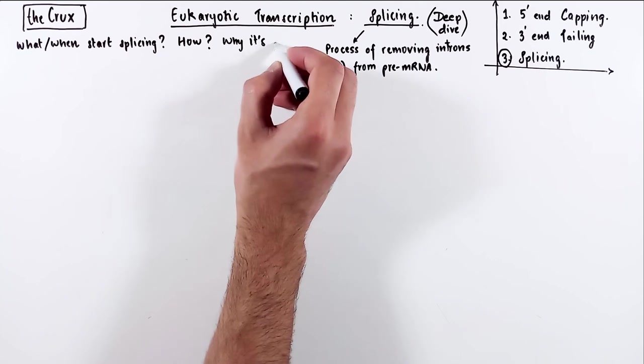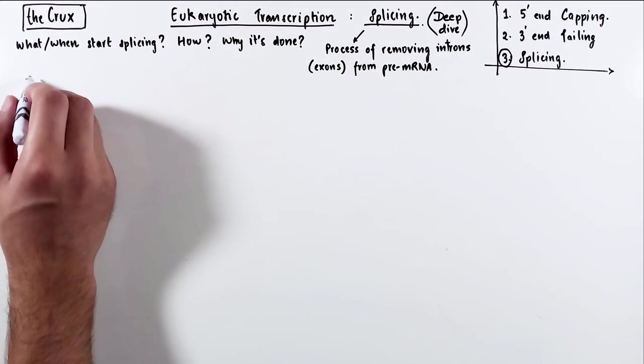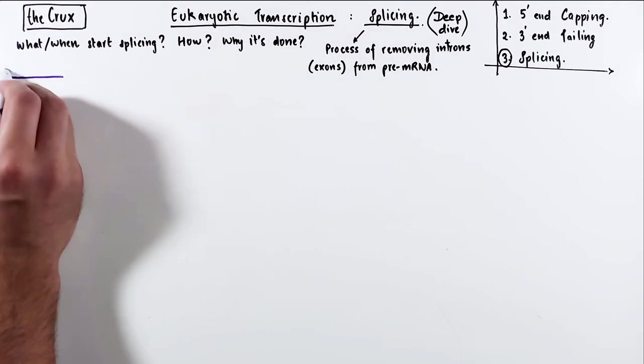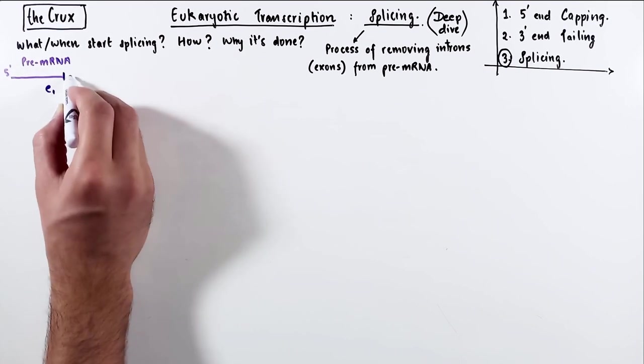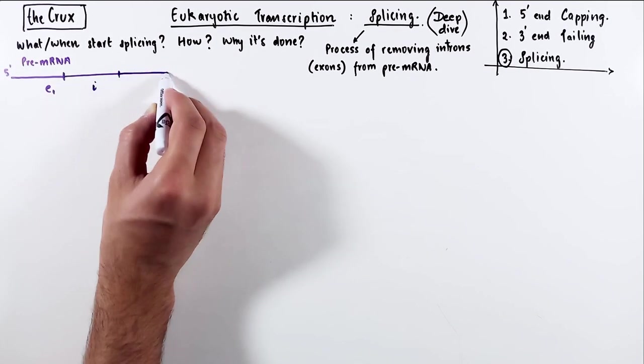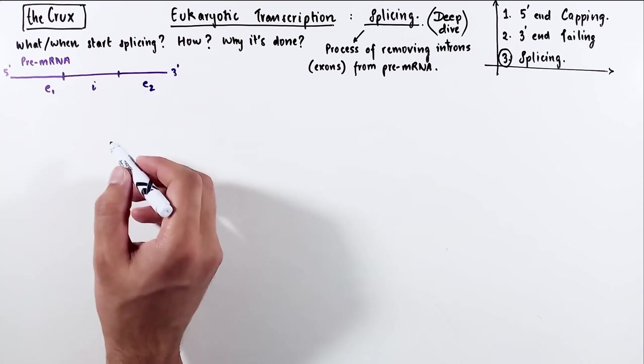and towards the end we will see why splicing is done. Let's start by simply sketching out the pre-mRNA, where we have the simplest case possible for splicing, with two exons, E1 and E2, which have an intron in the middle.